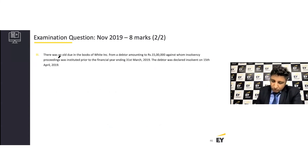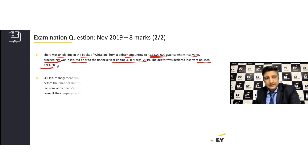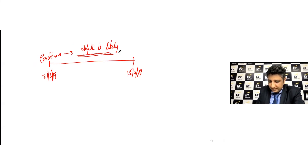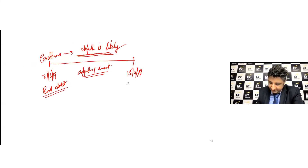The third scenario: there was an old due in the books of Whiting Corporation from a customer amounting to rupees 15 lakh, against whom insolvency proceedings were instituted prior to the year ended 31st March 2019. The customer was declared insolvent on 15th April 2019. On 31st March 2019, the conditions exist that the default is likely — so this is a classic example of an adjusting event. It implies that the entire rupees 15 lakh has to be shown as a bad debt: debit bad debt rupees 15 lakh, credit receivable rupees 15 lakh — the receivable is reduced as an adjusting event.